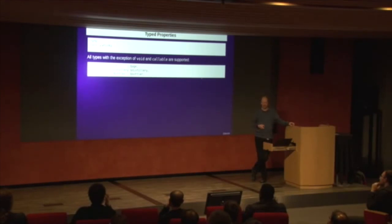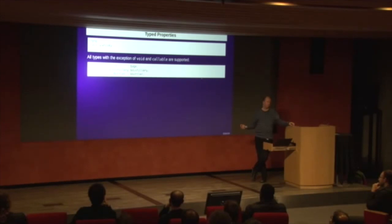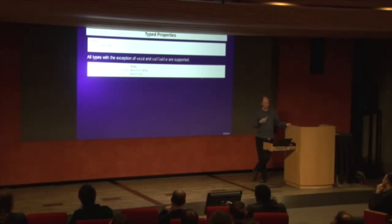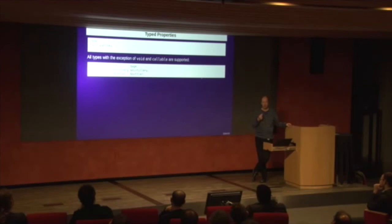Typed properties are basically normal properties with an extra keyword denoting the type. So in this case we have int, integer and a number for the age of a whiskey, a class distillery describes the distillery that makes the whiskey, and then an optional private property which is the bottler — the person who puts the whiskey in the bottle. All the types you can already use in PHP you can also use as property types, except for void because that's kind of pointless.